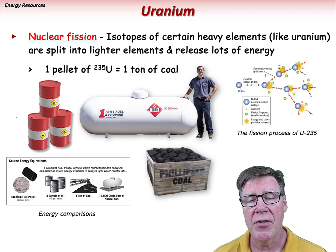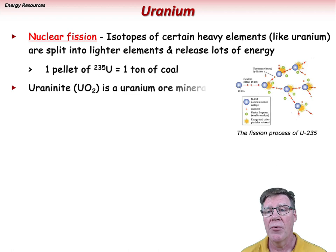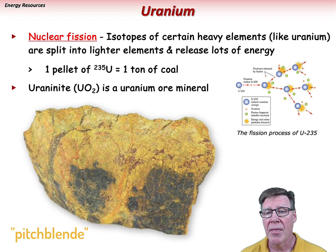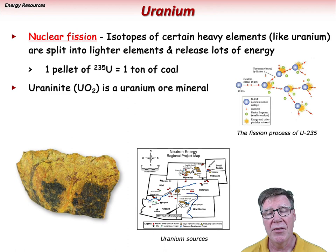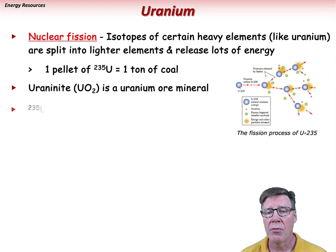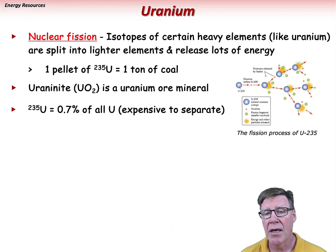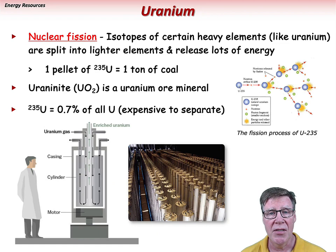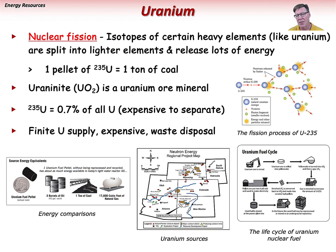The uranium ore, uraninite (formerly known as pitchblende), is an oxide mineral mined in 13 countries. In the western U.S., it is found in different geologic settings, including breccia pipes and sedimentary rocks. Yellow cake is the more processed version of this ore. Uranium-235 represents less than 1% of naturally occurring uranium and must be separated from the more abundant uranium-238, an expensive process. Uranium can be considered a fossil fuel as it is present in finite supply, is expensive to extract, and there are significant radioactive waste disposal concerns.